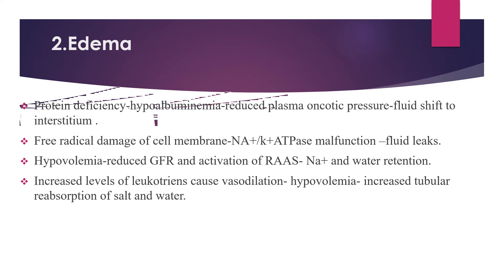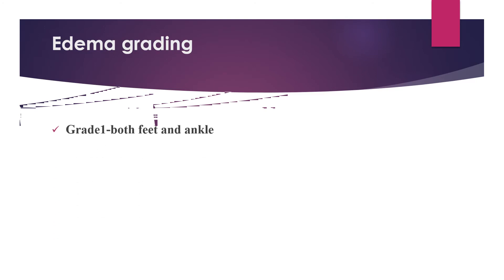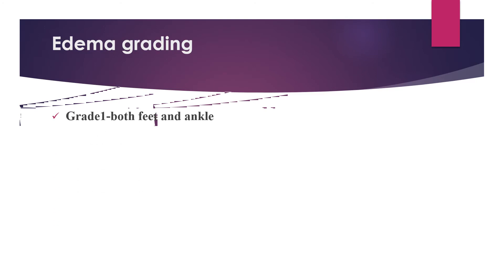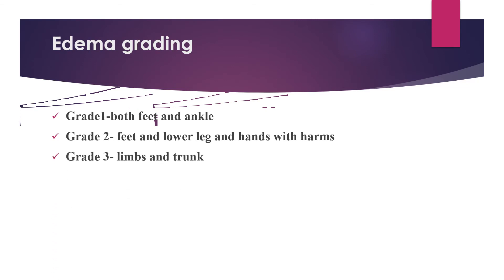Edema grading in malnutrition: Grade 1 — edema on both feet and ankles. Grade 2 — edema on feet, lower legs, and also on hands and arms. Grade 3 — edema on limbs and trunk. Grade 4 — anasarca.